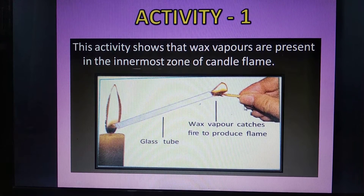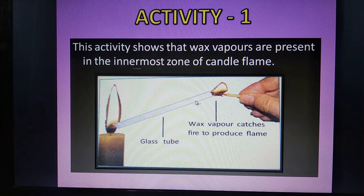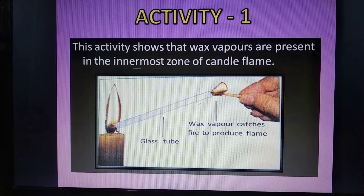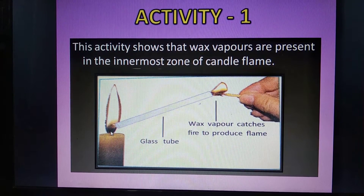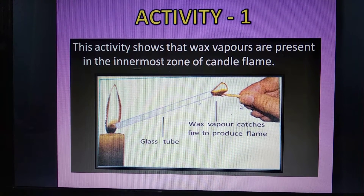Hold a thin glass tube with a pair of tongs and introduce one end of this glass tube into the innermost dark zone of the candle. Now bring a lighted matchstick near the other end of the glass tube. We will see a flame at this end of the glass tube.